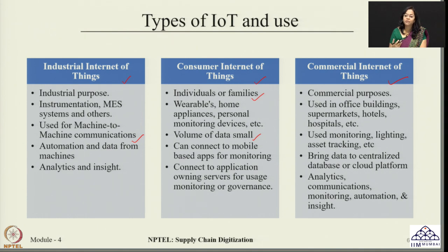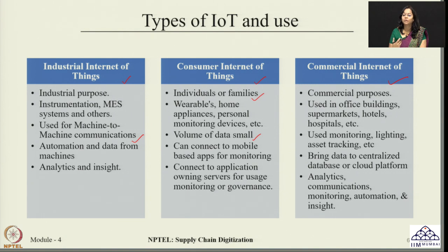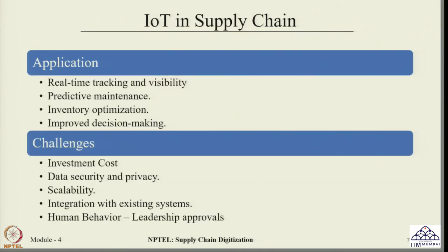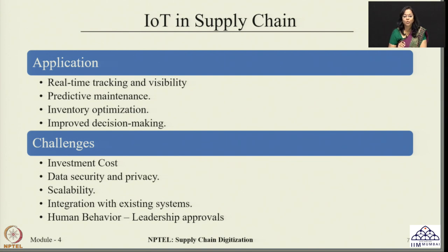In terms of its application, Commercial IoT is quite useful in office buildings, supermarkets, hotels, hospitals and so on. It can be used for monitoring lighting, asset tracking, and other commercial purposes. The data which is collected is brought to a centralized database or a cloud platform, and the next steps of analytics, communications, and monitoring can be done on this collected data. Depending upon the use of these IoT systems - whether for industrial, personal, or commercial usage - the appropriate technologies have to be selected.